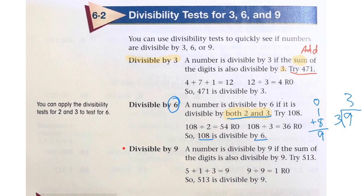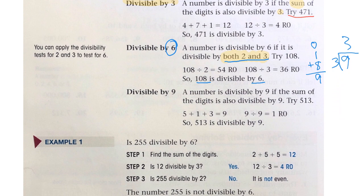How do you know if something is divisible by 9? A number is divisible by 9 if the sum of the digits is also divisible by 9. Just like with 3, if you add up the digits and can divide by 9 with nothing left over, then the whole number is divisible by 9. For example, 513: 5 plus 1 plus 3 is 9. 9 divided by 9 is 1 with nothing left over, so 513 is divisible by 9.